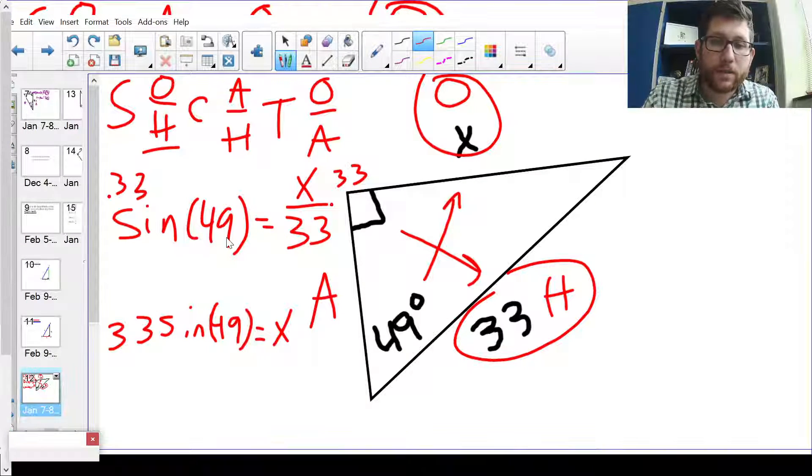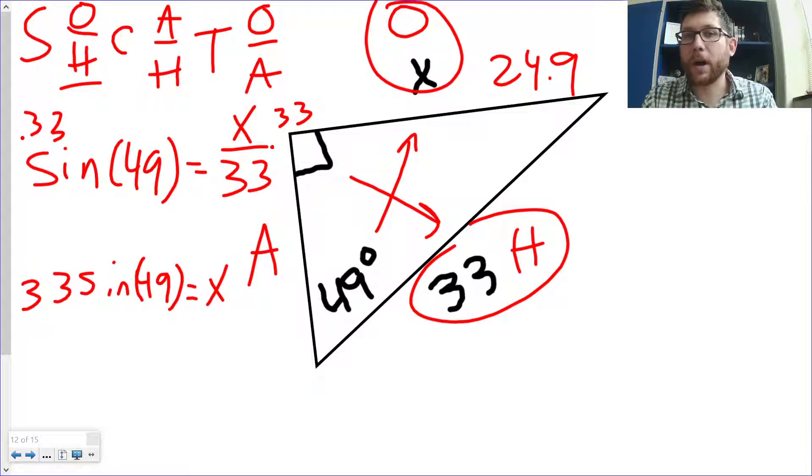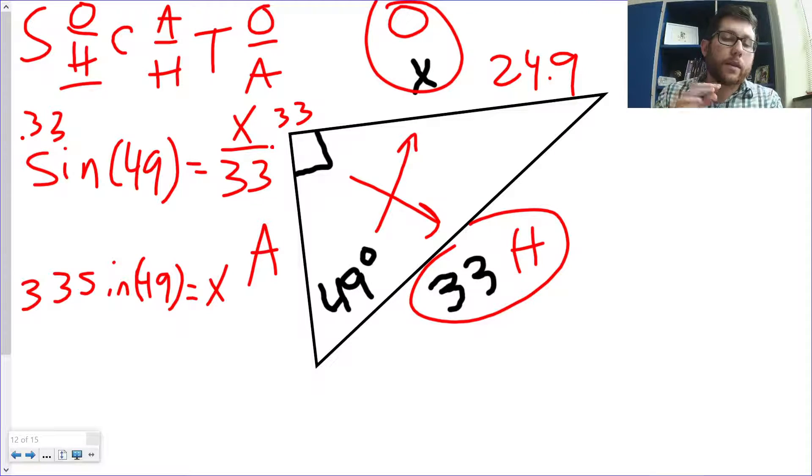Is that a reasonable answer for this problem? Yeah. It's got to be less than 33, right? 33 is my hypotenuse. If I set this up wrong, I could get a number bigger than 33. But, I know hypotenuse is always the biggest side. So, that seems reasonable. 24.9.